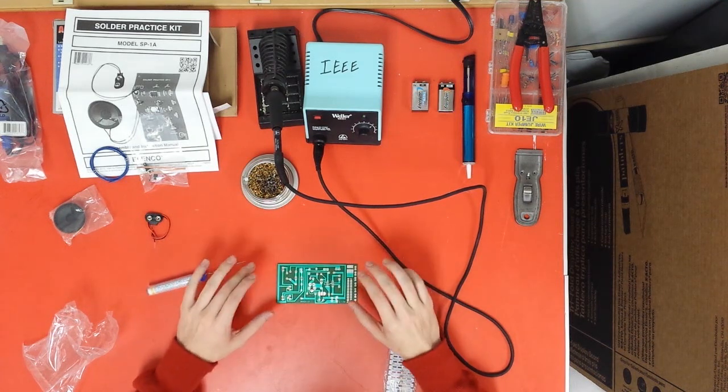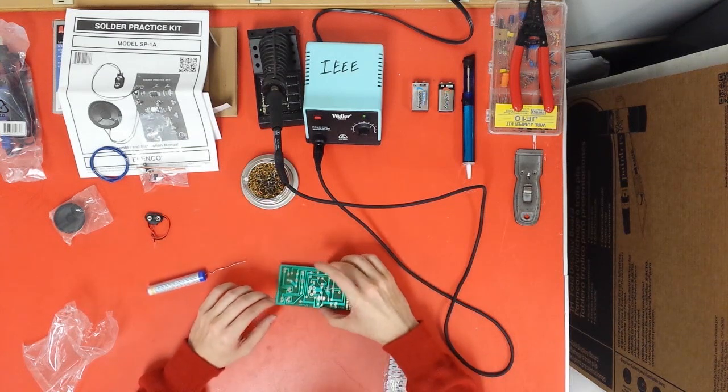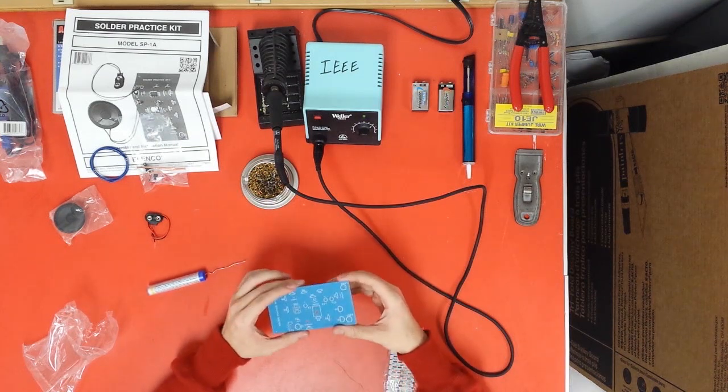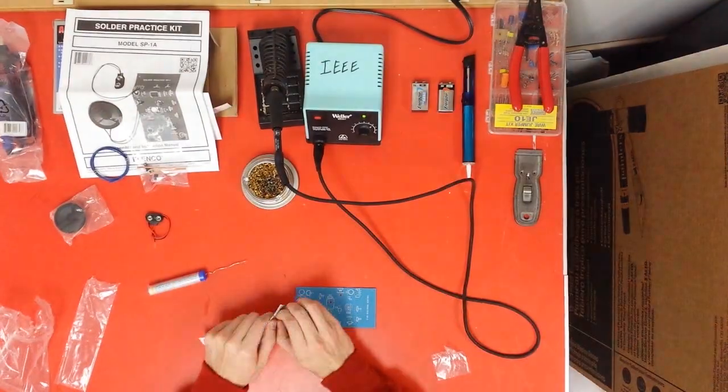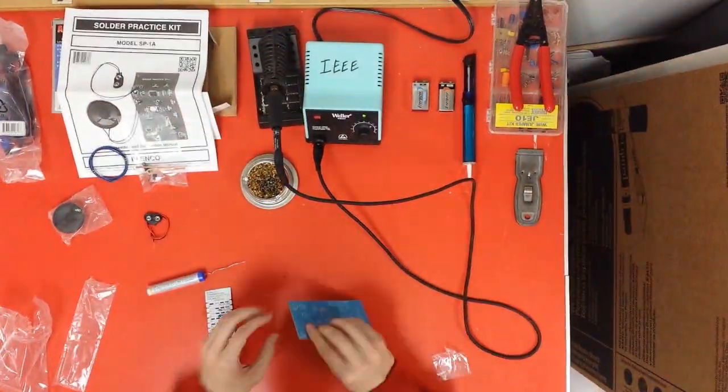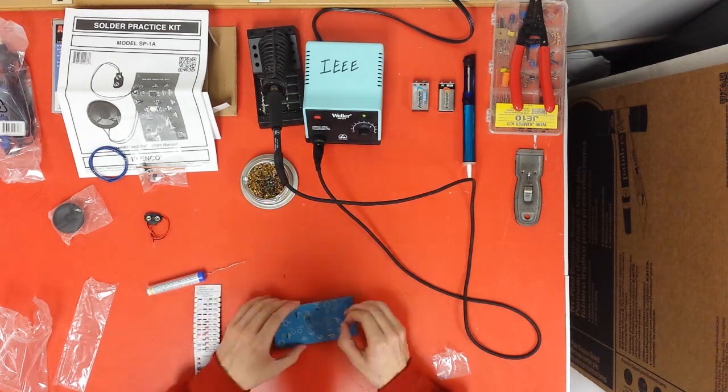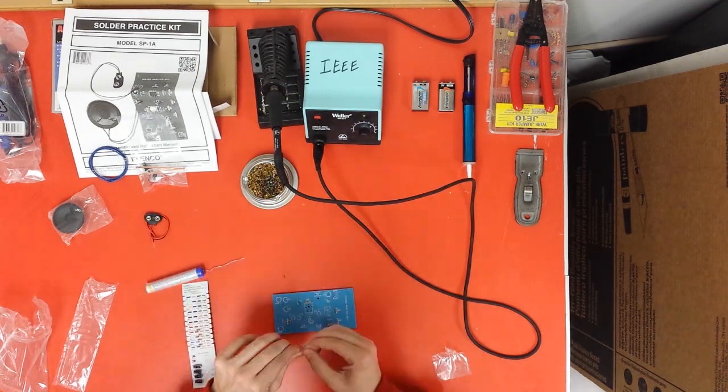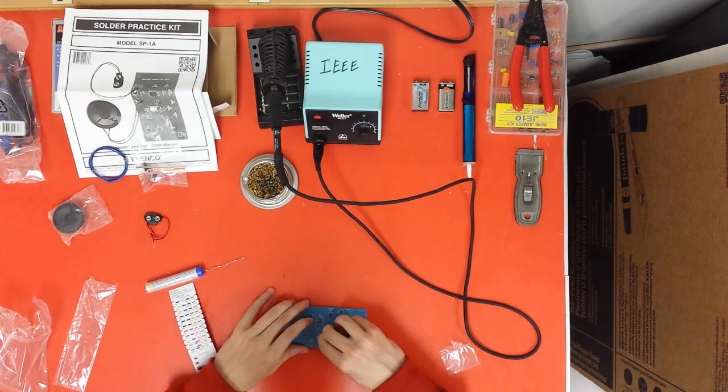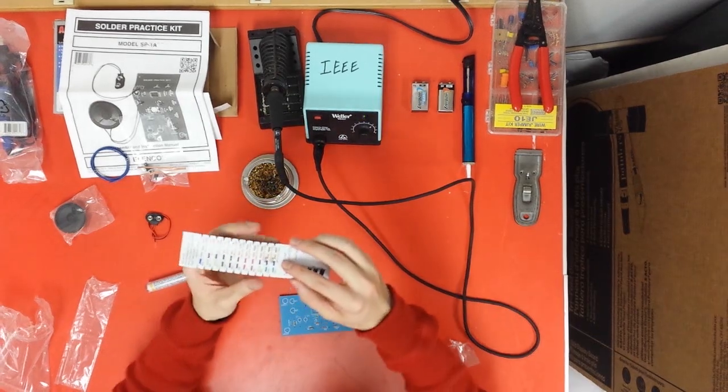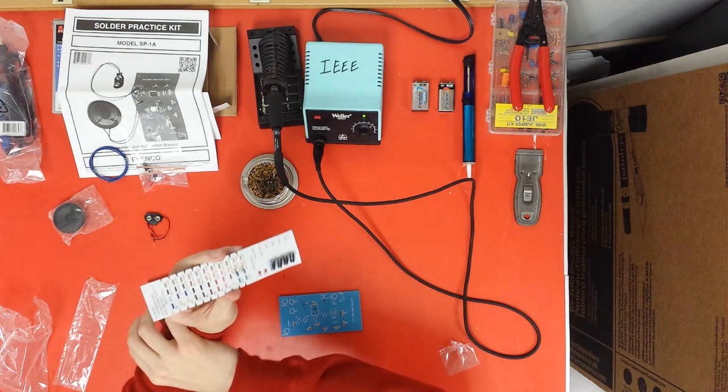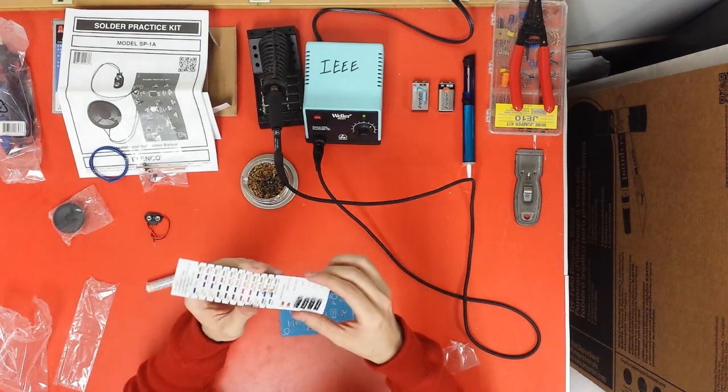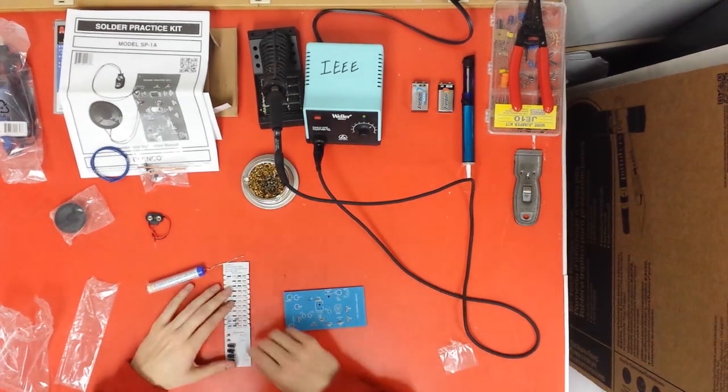I recommend putting all the components in before you solder anything and just kind of placing them inside and making sure that you have no errors with polarities. Alright, now in your kit you're going to have an extra two resistors and they're going to be labeled R4 and R6A. You don't have to worry about putting those in. Those just change the frequency. So we'll leave those aside for now.